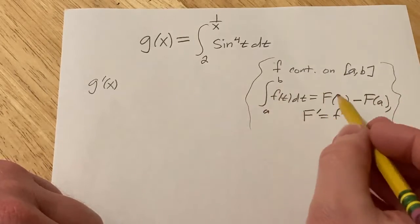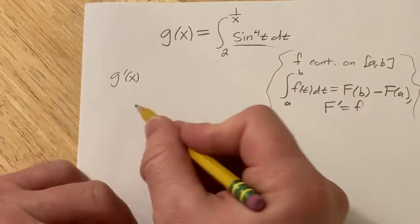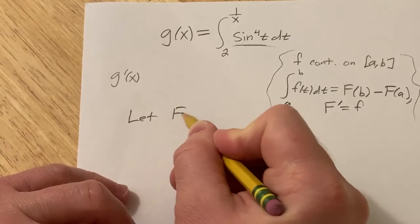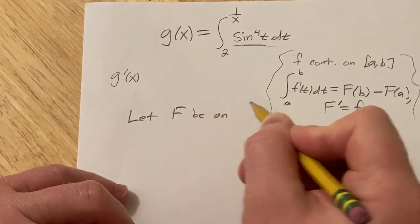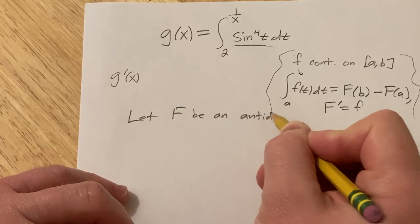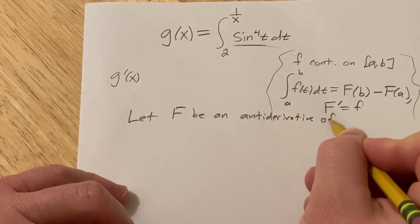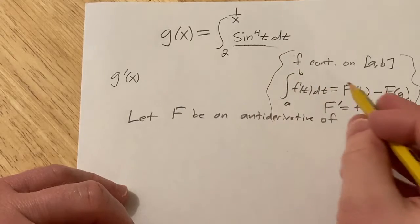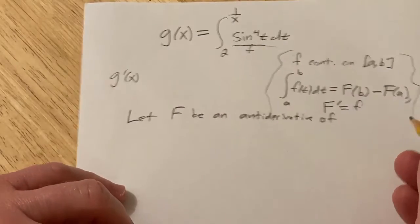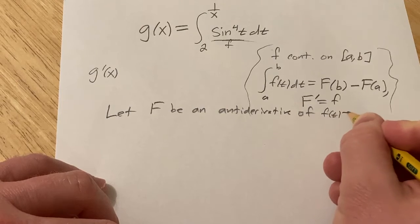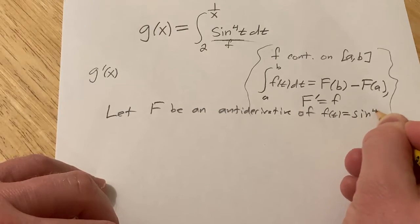So in this problem we're going to let big F be an antiderivative for this. So let F be an antiderivative of little f, which in our case will be this one here, sine to the fourth of t. So f of t equals sine to the fourth of t.